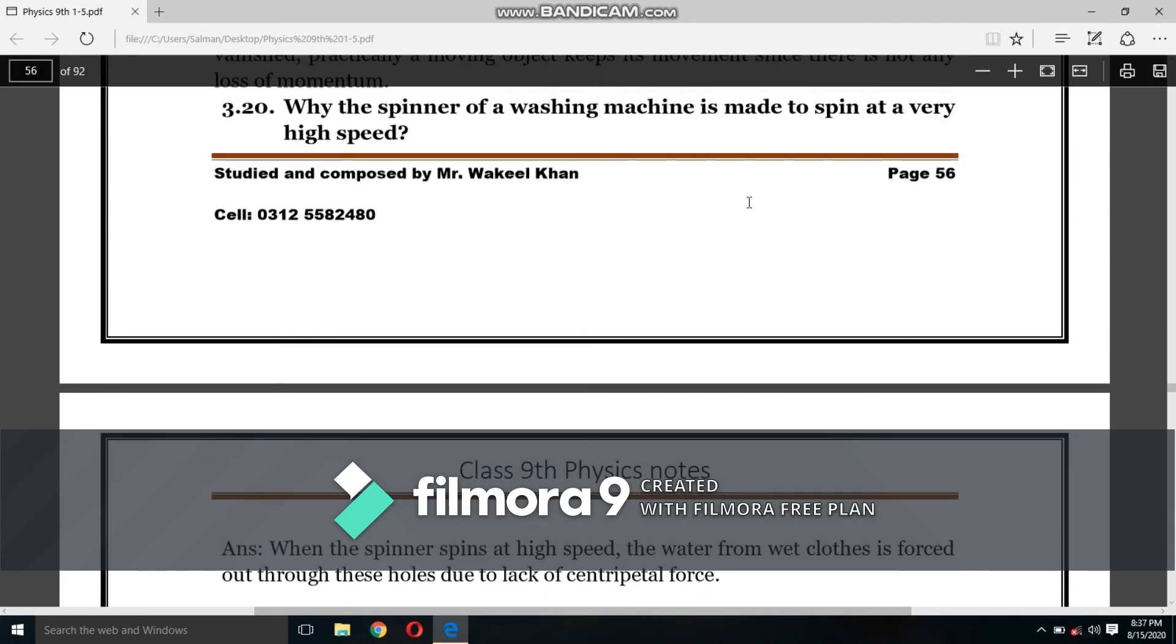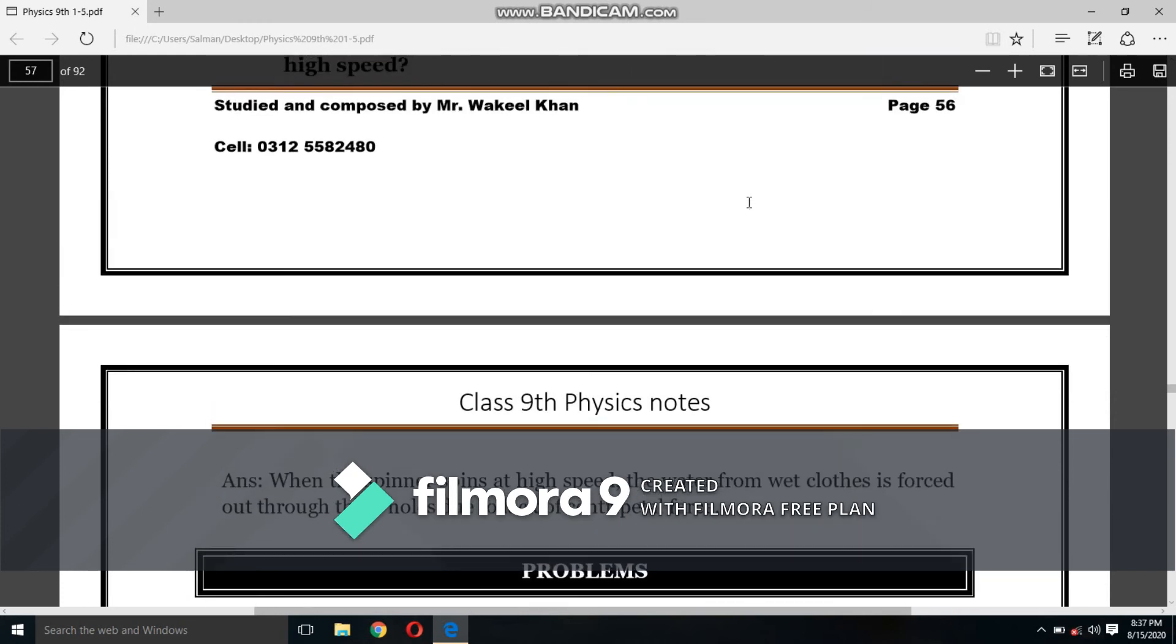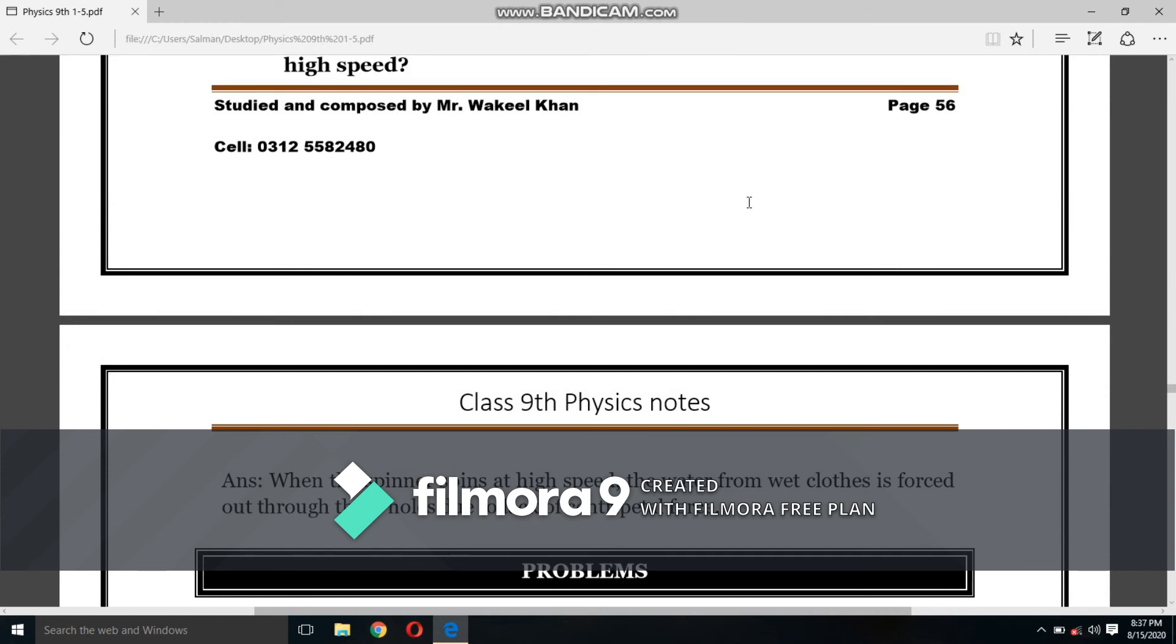Why is the spinner of a washing machine made to spin at a very high speed? When the spinner spins at a high speed, the water from the wet cloth is forced out through these holes due to the lack of centripetal force. The water from the wet cloth is forced out to these holes, and the water is thrown out.